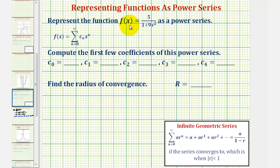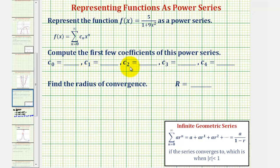We want to represent the given function f(x) = 5 / (1 + 9x²) as a power series, then compute the first few coefficients of the power series, where c₀ would be the coefficient of the degree zero term (the constant term), c₁ would be the coefficient of the degree one term, and so on. We also want to find the radius of convergence.